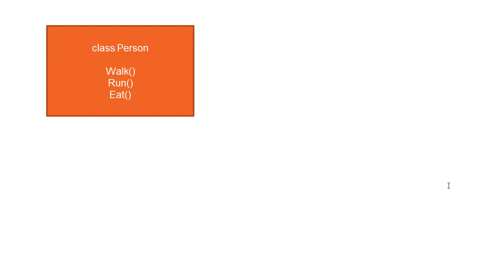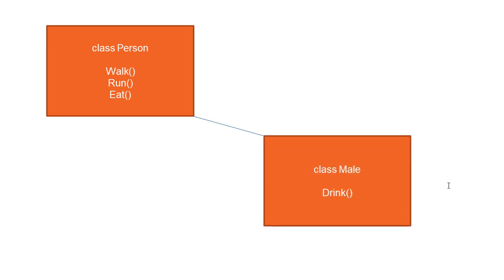What exactly does single level inheritance say? Suppose you already have a class called Person with a couple of methods — let's say walk, run, and eat. If I'm creating another class, say Male or Female, and I want to reuse all the methods from the Person class, I simply inherit the Person class from my Male class and can access all the properties and methods from Person. How do we do this in programming? Let's see one by one, and once you understand this first level of inheritance, I'll move on to multi-level and multiple.